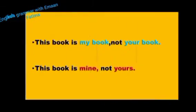Look at these examples. 'This book is my book. Not your book.' — sounds repetitive. 'This book is mine. Not yours.' — sounds more natural. So, a possessive pronoun replaces a possessive adjective plus noun to avoid repeating information that is already clear. Here, 'yours' refers to 'your book,' so it is a possessive pronoun.